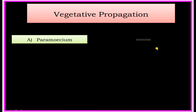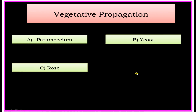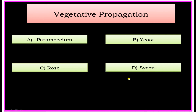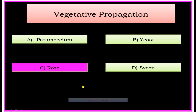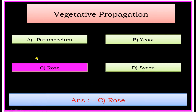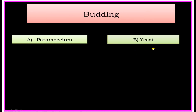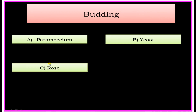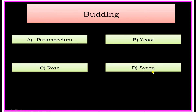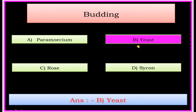Vegetative Propagation — Options: A) Paramecium, B) Yeast, C) Rose, D) Cycron. Answer: Rose. Budding — Options: A) Paramecium, B) Yeast, C) Rose, D) Cycron. Answer: Yeast.